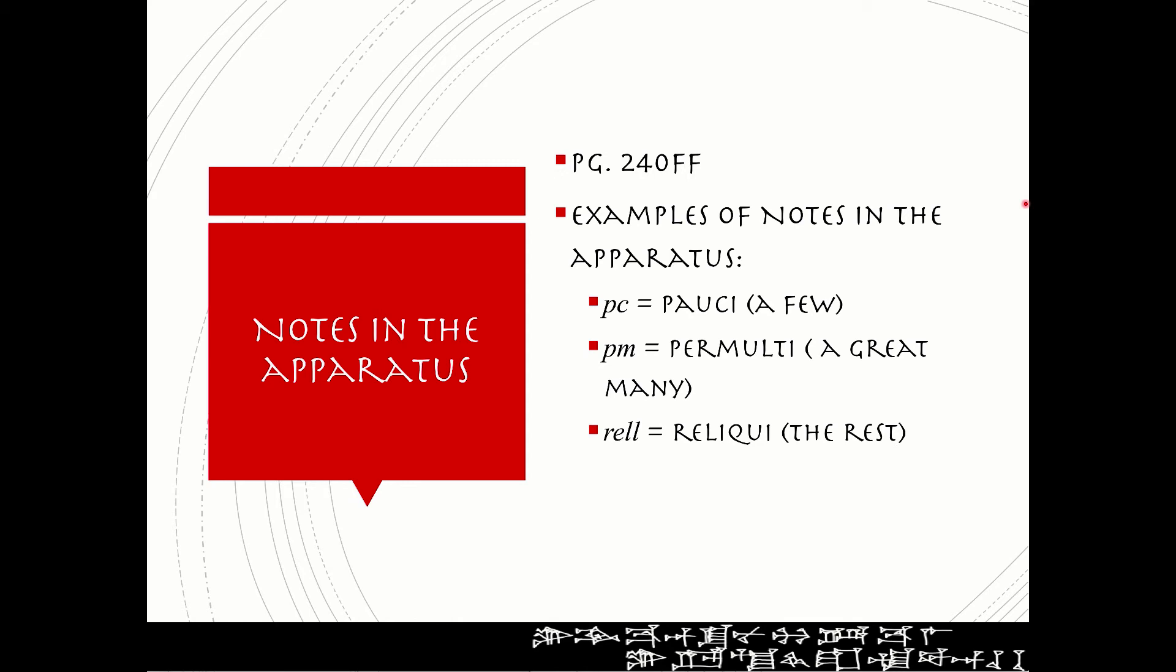PM, permulti, a great many; reliqui, the rest. When you see these in there, it's indicating that, for example, if you see PC, it means only a few manuscripts have this.